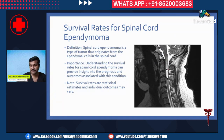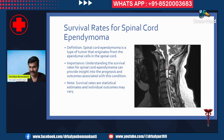This is an example of spinal cord ependymoma. It is one of the most common tumors of the spinal cord, accounting for 40 to 60% of spinal cord tumors in adults and around 30% in children. They are intramedullary tumors that arise from the ependymal cells within the central canal of the spinal cord. This is an example of ependymoma in the cervical region.